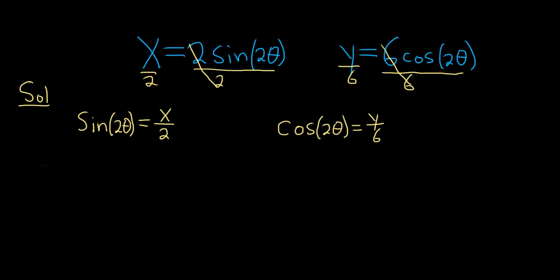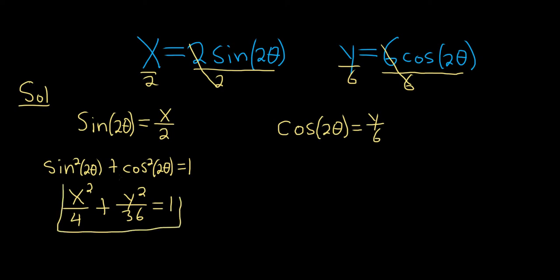So now we use a familiar identity from trig that says sine squared of 2 theta plus cosine squared of 2 theta equals 1. So sine of 2 theta is x over 2, so if you square it, you'll get x squared over 4. Cosine of 2 theta is y over 6, so if you square it, you'll get y squared over 36. And this equals 1. This would be the rectangular equation.